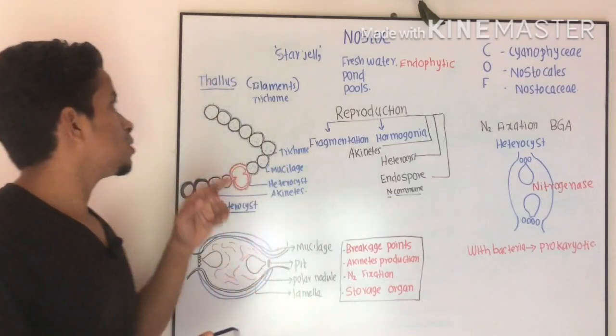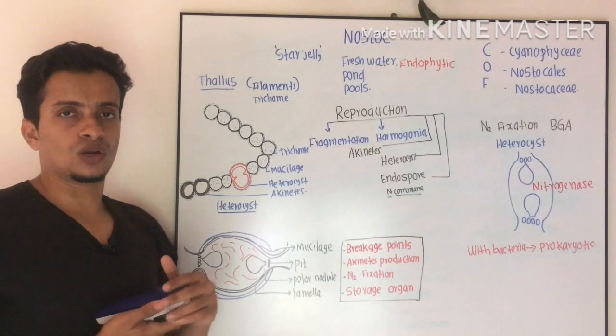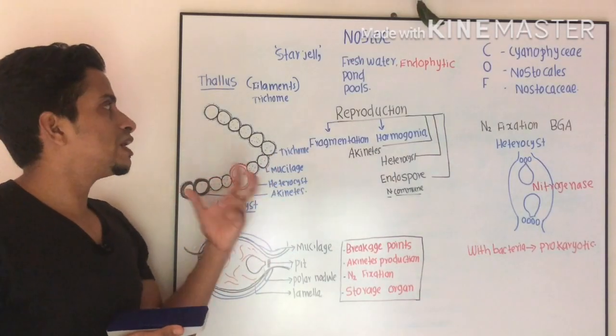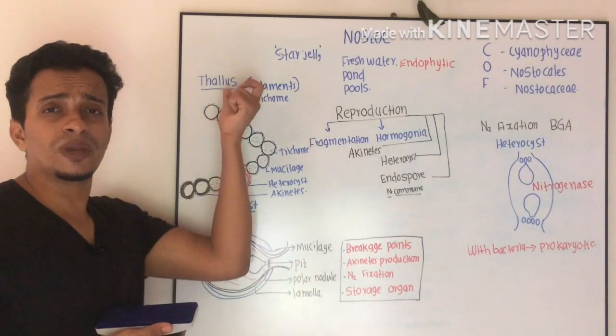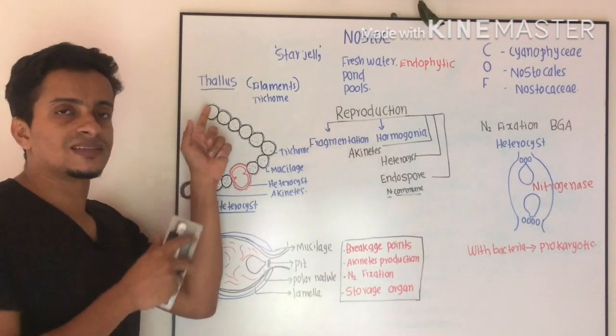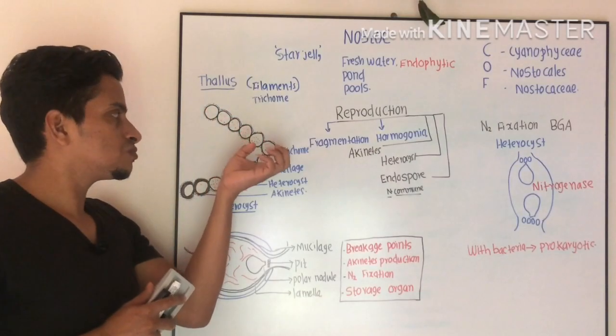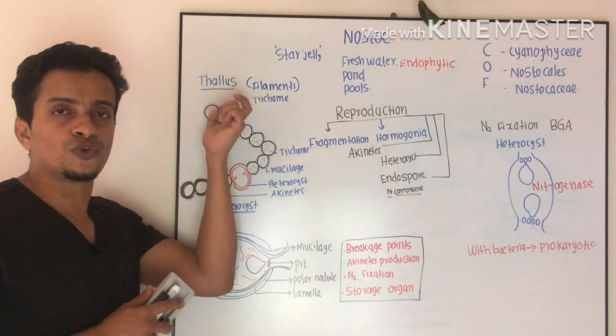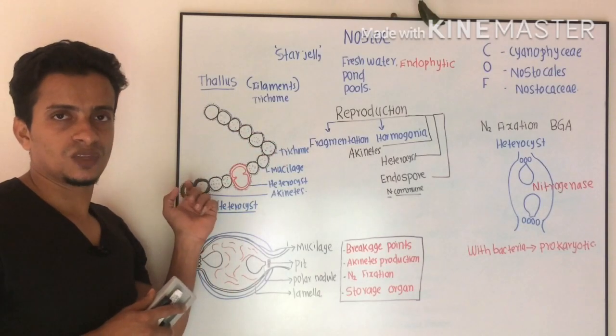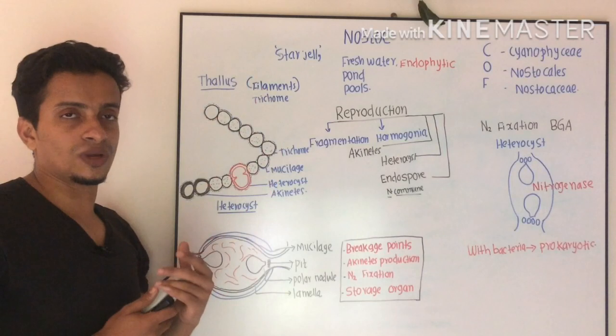Now, talking about thallus structure. The thallus organization is filamentous. Here, the adjacent cells are connected together to form a filamentous linear structure. This is the thallus organization.